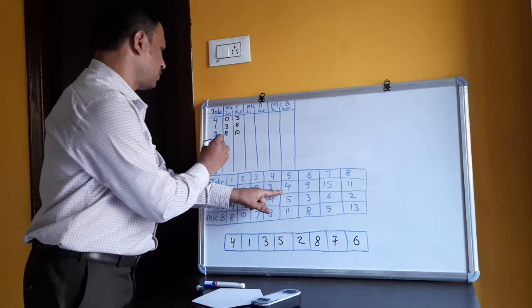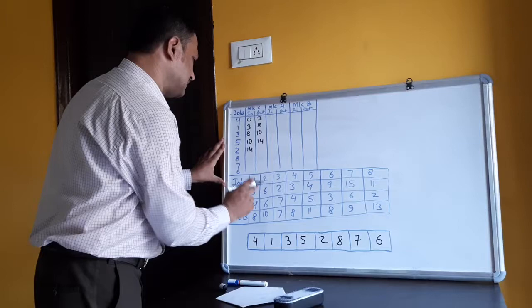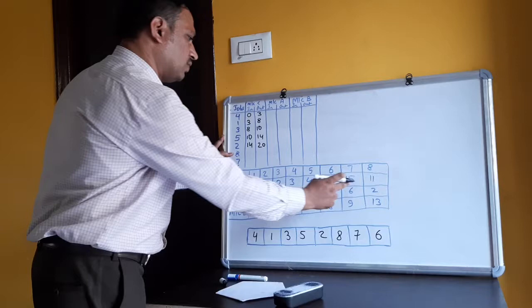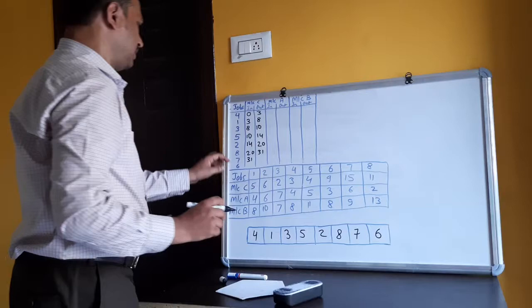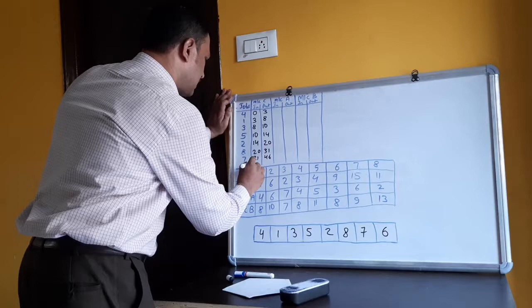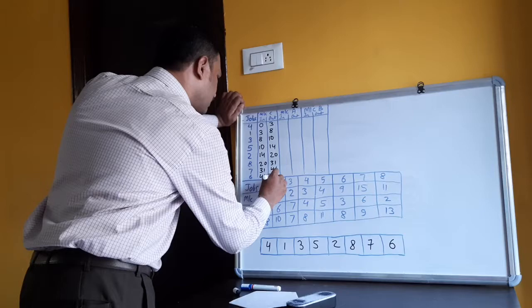Continuing machine C: for job 5, processing time is 4, so 10+4 = 14. For job 2, 14+6 = 20. For job 8, 20+11 = 31. For job 7, 31+15 = 46. For job 6, 46+9 = 55. Machine C completes at 55.